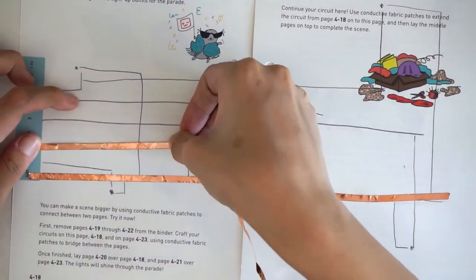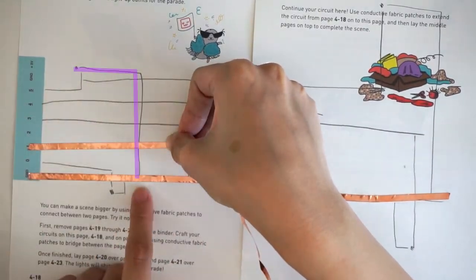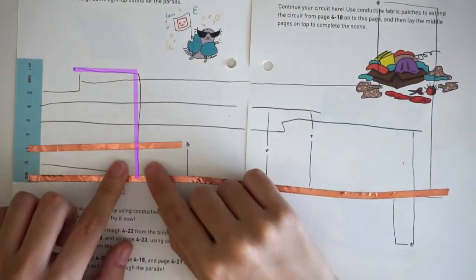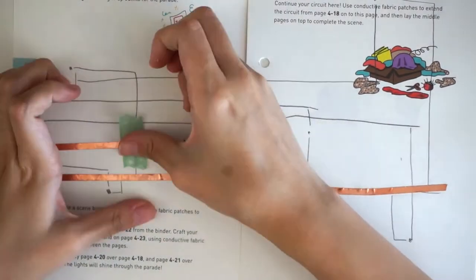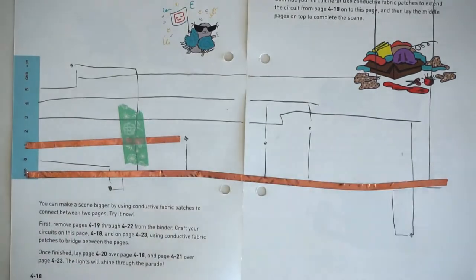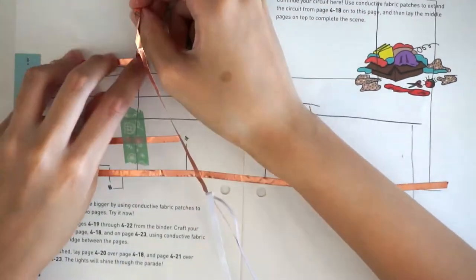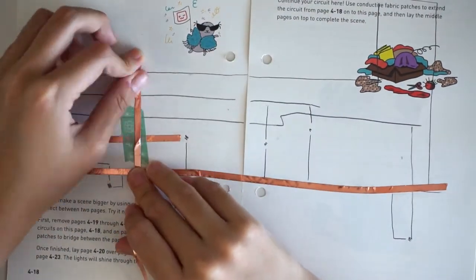Now we start laying down the LED traces. Hmm, a ground trace has to cross over pin 1, but this could cause a short circuit. To prevent the short circuit, we take a piece of regular tape and cover up the crossing point. The ground trace is now safely crossing over pin 1.